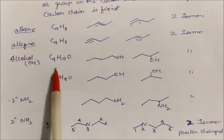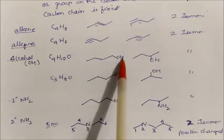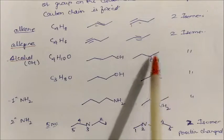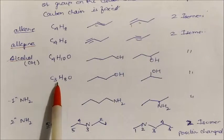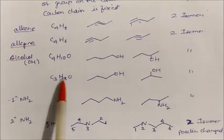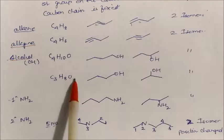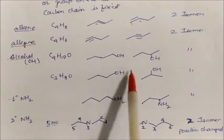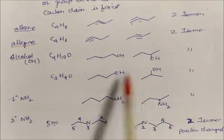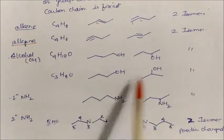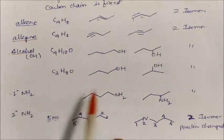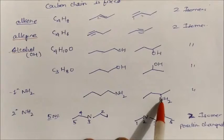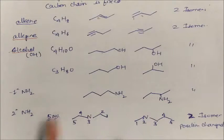In alcohols, OH is attached to the first carbon in one isomer and to the second carbon in another — two isomers. For C3H7OH (propanol): one is the primary alcohol at carbon one and the other is the secondary alcohol at carbon two. Similarly in amines, having the amino group at the first carbon gives a primary amine and at the second carbon gives another primary amine.